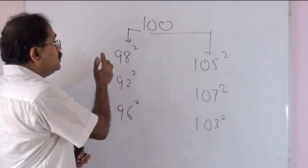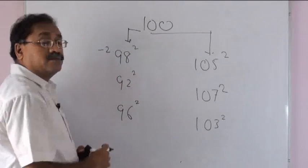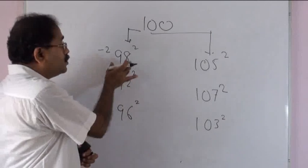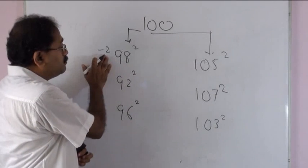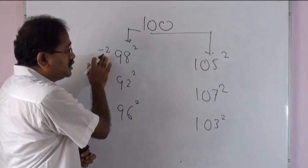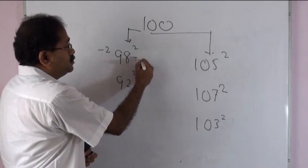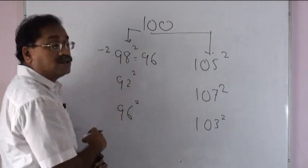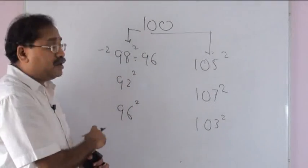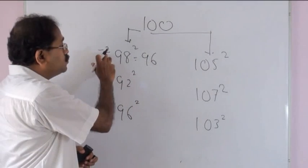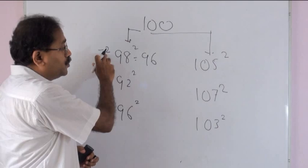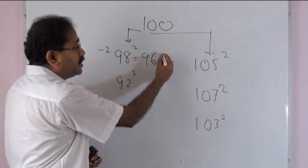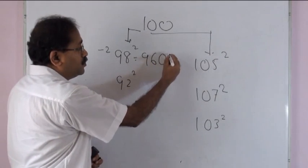98 is 2 less than 100, therefore 98 minus 2, which is 96 — so the first part is 96, followed by 2 squared, which is 4. As 4 is a single digit number, we write 04. So 98 squared equals 9604.